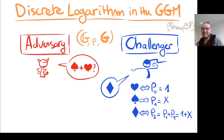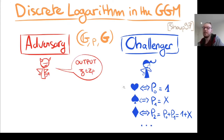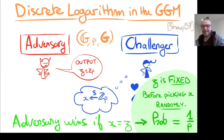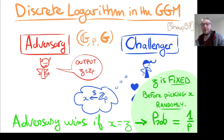This means we are simulating the discrete logarithm game in the generic group model without any secret. The adversary plays the game and outputs some z trying to guess the secret, but there is no secret, so the challenger picks one random secret at the end. The adversary wins if x equals z, but since z is fixed before x is picked randomly, this happens with probability 1/p. Since p is large, the adversary has negligible probability of winning.